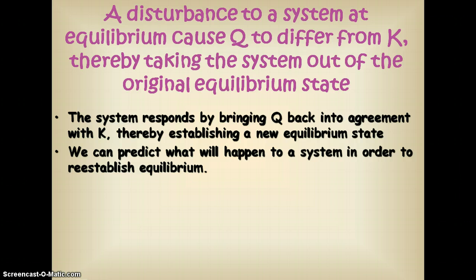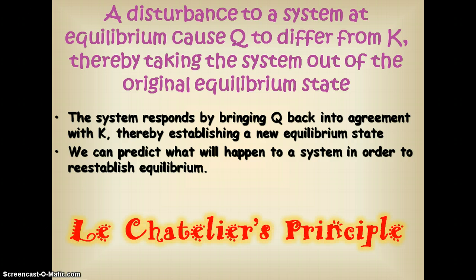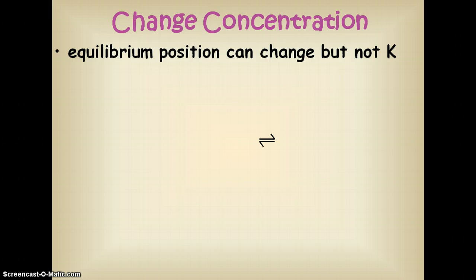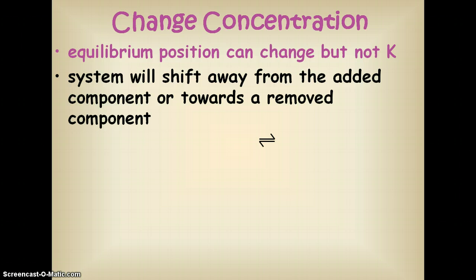The system is going to establish a new equilibrium state after it has dealt with the stress. We can predict what will happen to the system in order to reestablish equilibrium — we can figure out what the system is going to do to correct what has caused the equilibrium to be disturbed. If you change the concentration of reactants or products in a reaction, that is going to affect your equilibrium position and your equilibrium concentrations. It is not going to affect K though — K will still be the same value. The system is going to shift away from the added component or towards the removed component.